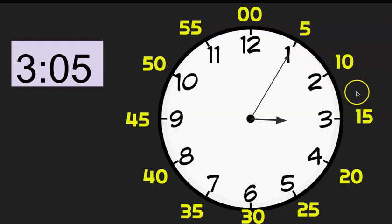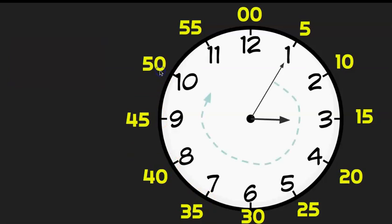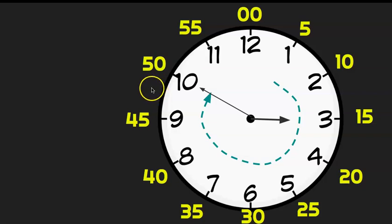Counting by fives: five, ten, fifteen, twenty, twenty-five, thirty, thirty-five, forty, forty-five. So my minute hand is going to move forty-five minutes to here. Now as my minute hand is moving, so is my hour hand. When I'm drawing this, I'm going to have to shift my hour hand just a little to show that it's getting closer to four o'clock.